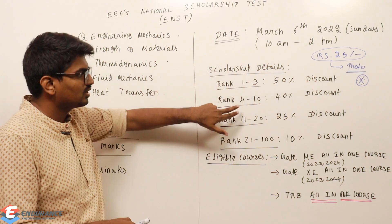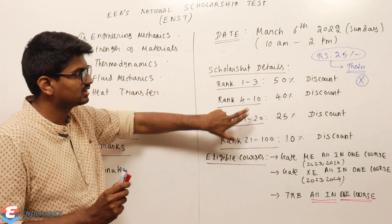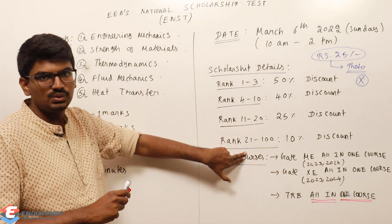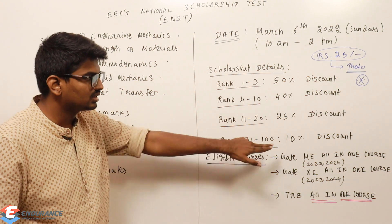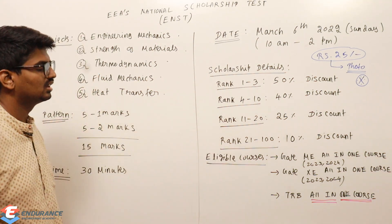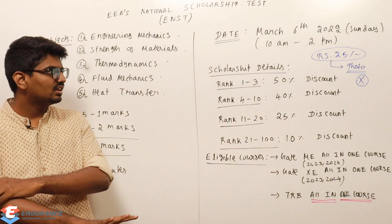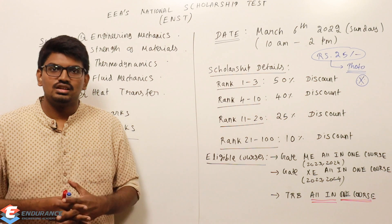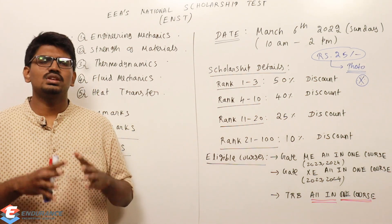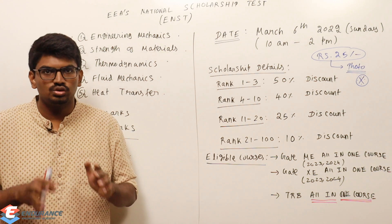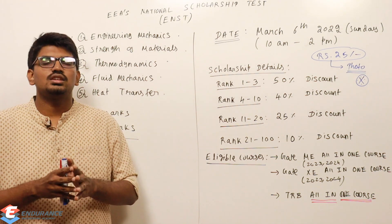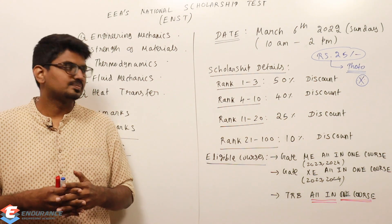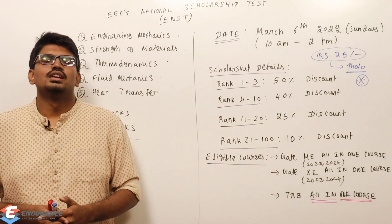For ranks 4 to 10, you get a 40% discount. For ranks 11 to 20, you get a 25% discount. For ranks 21 to 100, you get a 10% discount. Discounts are given up to rank 100. This is the basic idea. Check the demo videos in the description for course content. You don't have to register for the course yet — register for the scholarship test fee first.